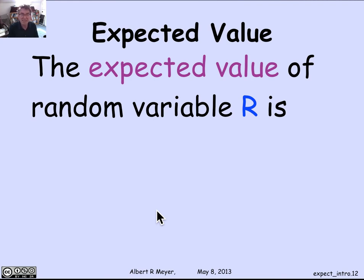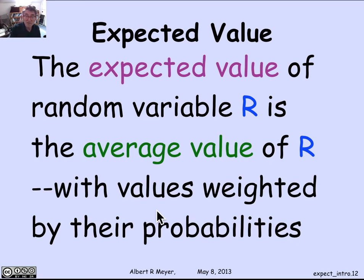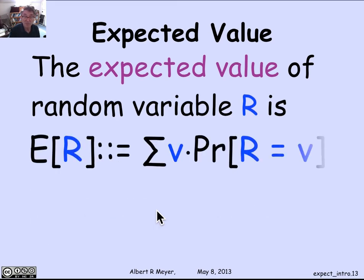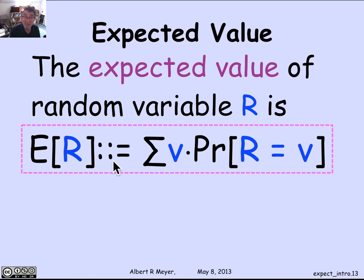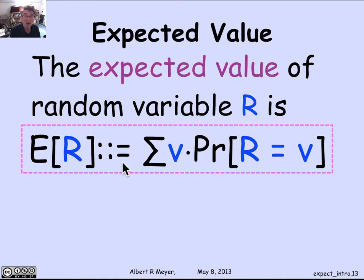Let's abstract the expected value of a random variable R. A random variable probabilistically takes on different values with different probabilities. Its expected value is defined to be its average value, where the different values are weighted by their probabilities. Formally, the expectation of R is the sum over all possible values v of v times the probability that R equals v. This works because, assuming a countable sample space, R can only take countably many values, so this is a countable sum.